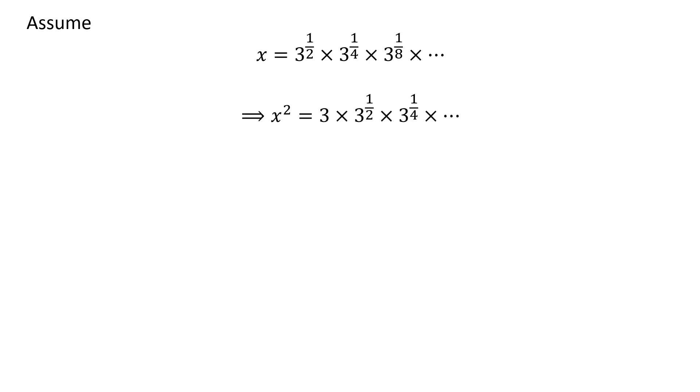Taking square of both sides, we get x squared is equal to 3 times square root of 3 times 4th root of 3 and so on.